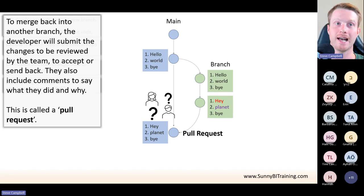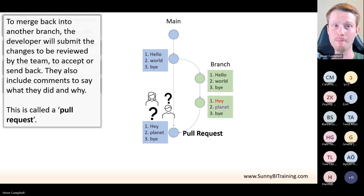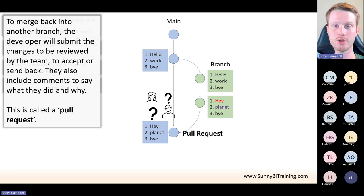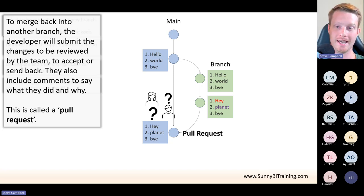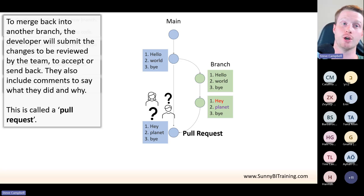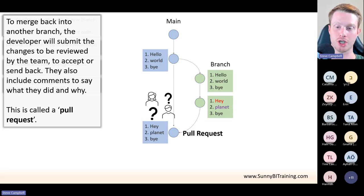A big thing about Git as well is everything you do, you add comments. Every time you make commits, every time you submit stuff, you'll add comments on what you changed. This has a really good history for making sure everyone can see what's happened and who's changed it. It also says who did it, so we can have a very open and easy way to see what's changed and why.